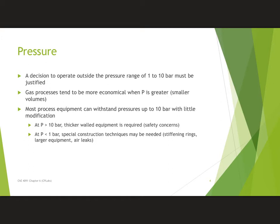Let's look at pressure first. If you're going to operate outside the range of 1 to 10 bar—0 to 9 gauge, 1 to 10 absolute—you need to justify that. Generally, if it's a gas process, it's going to be more economical; molecules are going to be closer together when the pressure is on the large side. Up to 10 bar is probably not going to be that big a deal. But if you go much higher pressure than that, you're going to need thicker-walled equipment and really be concerned about safety. If you go to vacuum, less than 1 bar, you're going to need special construction techniques—stiffening rings and things to make sure that stuff doesn't suck in. You're going to usually need larger equipment for the same task, and you have to worry about air leaks and the dangers those might pose.